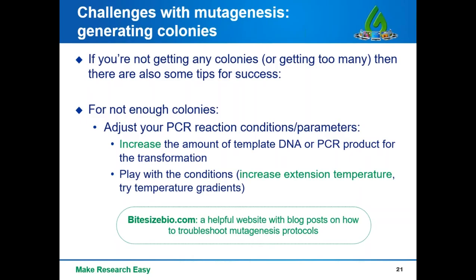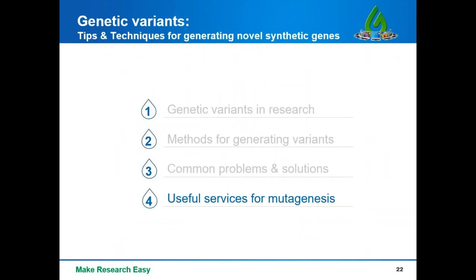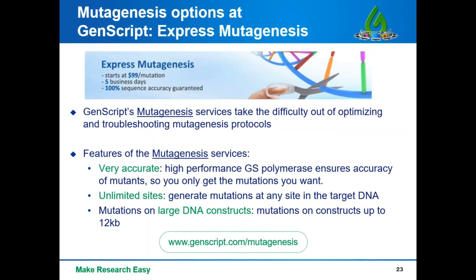If you're having the opposite problem and not getting enough colonies after your transformation, you can try increasing the amount of template DNA or PCR product for transformation. Alternatively, you might need to adjust reaction conditions such as increasing the extension temperature or trying temperature gradients. Since this really requires a lot of trial and error, there are some good resources out there — Bite Size Bio is a great website with blog posts from scientists that can help you troubleshoot mutagenesis protocols. Chances are if you're having these problems, many others are having them as well.